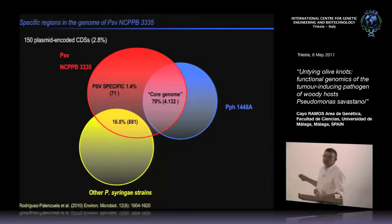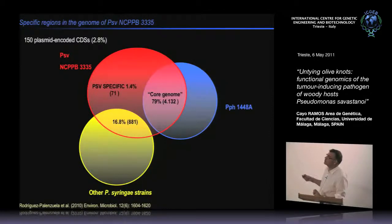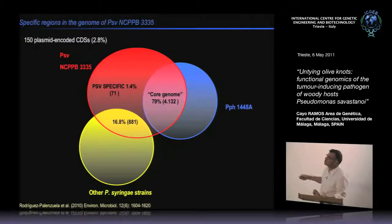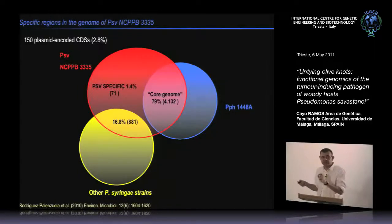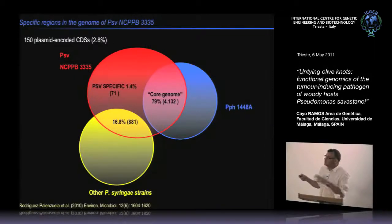The interesting part of this analysis is the comparison with a pathogen of an herbaceous plant. Unsurprisingly, only 1.4% of the genome—71 genes—were specific to our bacteria. The rest were shared with phaseolicola, infecting bean, or other Pseudomonas syringae strains. This portion of the genome is one of our current hotspots, as we try to define what makes savastanoi different in infecting a woody plant and producing tumors rather than infecting an herbaceous leaf.